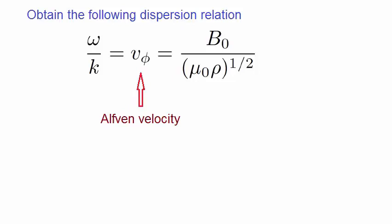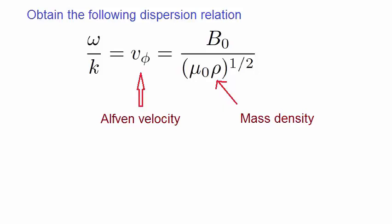So from this we can see that, regardless of the frequency of the wave, the phase velocity is going to be the same, provided the mass density and the magnetic fields don't change. This behavior is in sharp contrast to the previous cases that we've been looking at.